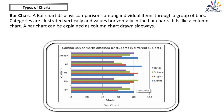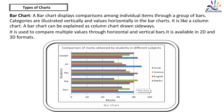Bar chart: A bar chart displays comparisons among individual items through a group of bars. Categories are illustrated vertically and values horizontally. It is like a column chart drawn sideways. A bar chart is used to compare multiple values through horizontal and vertical bars and is available in 2D and 3D formats.